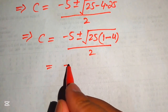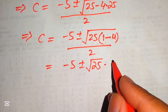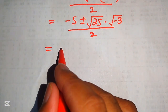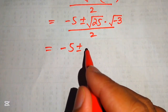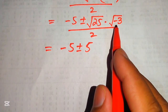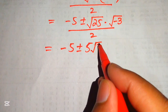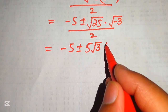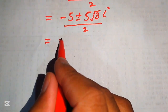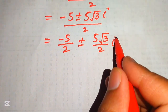We apply the square root separately: square root of 25 is 5, and inside we have 1 minus 4 equals minus 3. Since a negative sign appears inside the square root, it becomes iota — we replace the square root of negative 1 with iota. Breaking the fraction, the result is minus 5 over 2, plus or minus 5 times square root of 3, divided by 2, times iota.